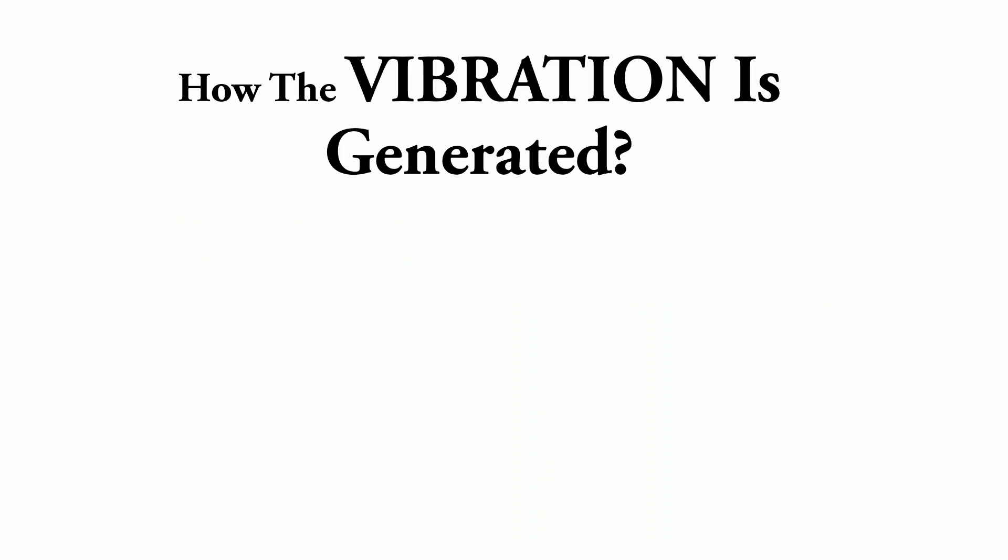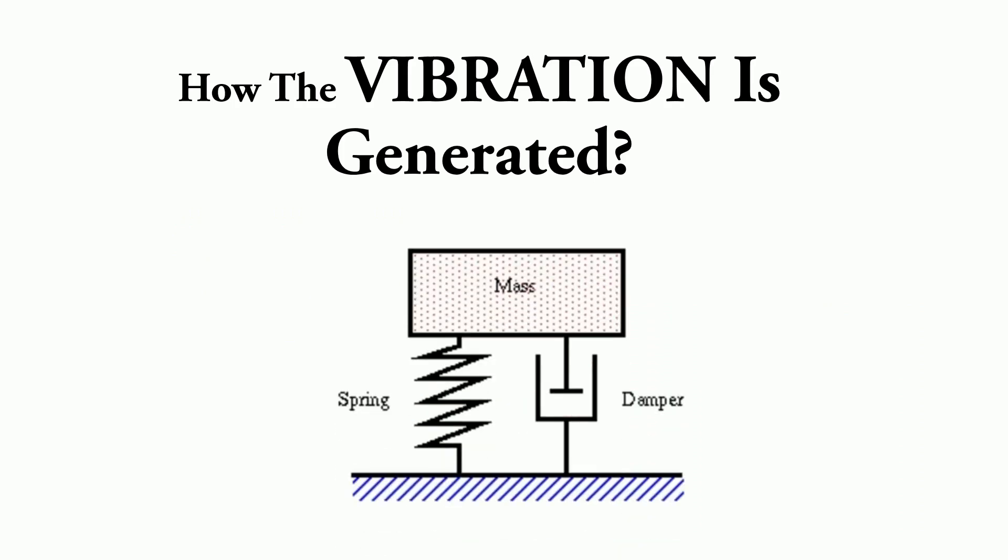How is the vibration generated? A vibratory system basically consists of three elements: the mass, the spring, and the damper.